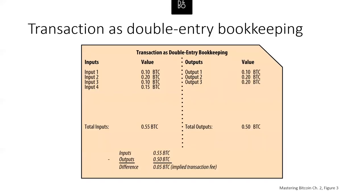Here we see a Bitcoin transaction shown as a double-entry bookkeeping diagram. This particular transaction has four inputs on the left and three outputs on the right. The total inputs are 0.10 BTC, 0.20 BTC, 0.10 BTC, and 0.15 BTC, adding up to 0.55 BTC. The outputs are 0.10, 0.20, and 0.20 BTC, totaling 0.50 BTC. The inputs exceed outputs by 0.05 BTC, and that difference becomes the transaction fee.